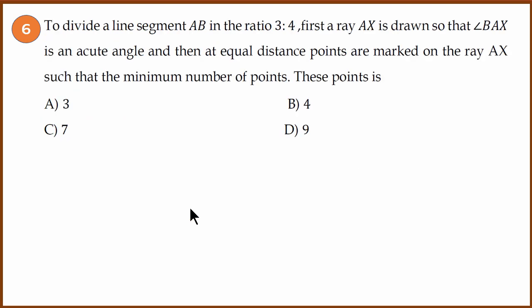Sixth question. Here they have given us a whole process to divide a line segment AB in the ratio of 3 is to 4. Ray AX is drawn. BAX is an acute angle. Then at equal distance, points are marked on the ray AX such that there are minimum number of points.